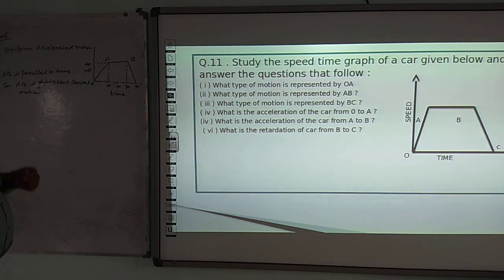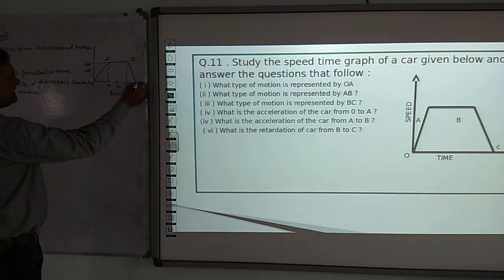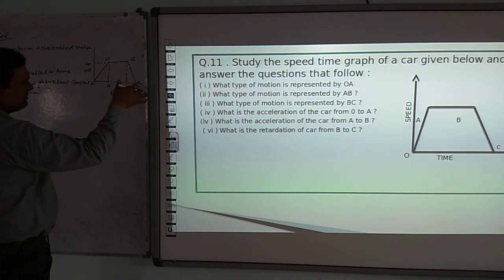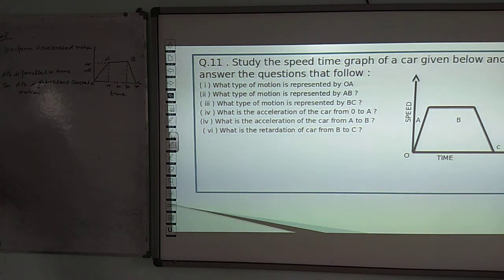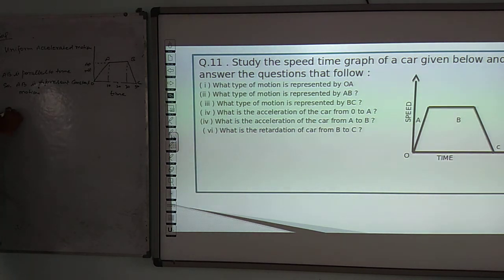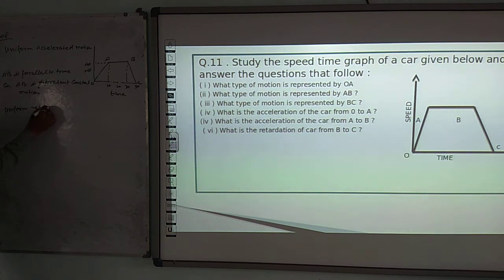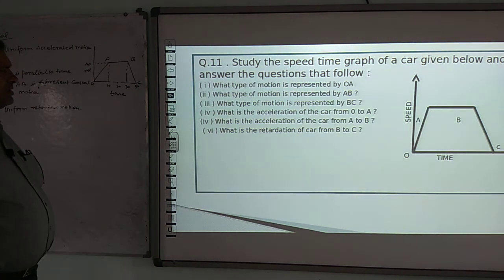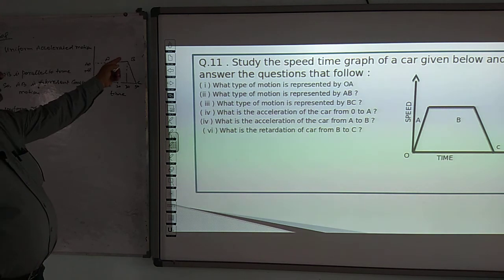The third question asks what type of motion is represented by BC. Unlike OA, which was increasing, the graph from B to C is decreasing. So BC represents uniform retarded motion, also called decelerated motion, because the car's speed is continuously decreasing.